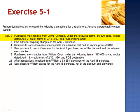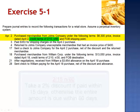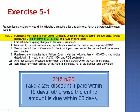On April 2nd, purchase merchandise from John's Company under the following terms: $6,300 price, invoice dated April 2nd, credit terms of 2/15 net 60, and FOB shipping point. There's a lot of information in here, so let's break it down. The invoice is dated April 2nd — that's when the clock starts ticking. Credit terms of 2/15 net 60 indicate that John's Company is offering us a 2% discount if we pay the amount within 15 days.